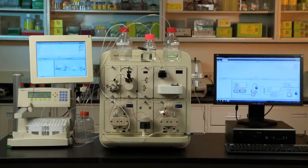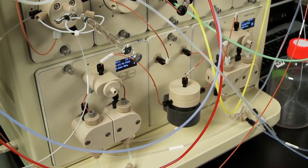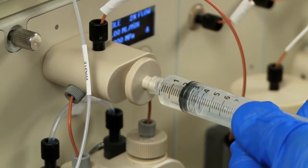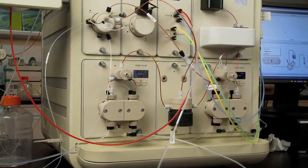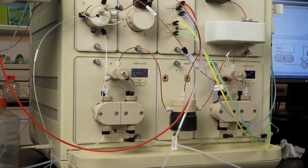You should purge your NGC system whenever you suspect air is downstream of the system pumps. Purging the system is also a good practice directly after priming a pump. You can purge the system using either the pump hardware faceplate or ChromeLab software. We'll demonstrate use of the hardware faceplate first.